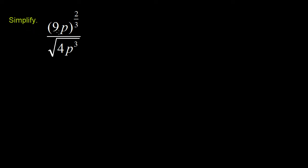We're asked to simplify 9p to the 2/3, all of that over the square root of 4p cubed. So let's do this step by step. The first thing we can do is say 9p to the 2/3 is the same thing as 9 to the 2/3 times p to the 2/3. That's what this top part can be simplified to.